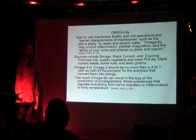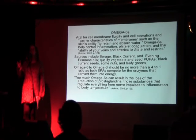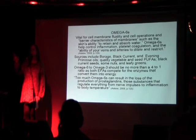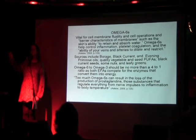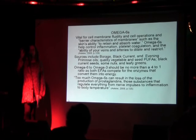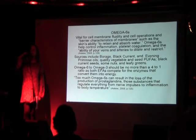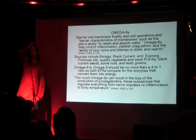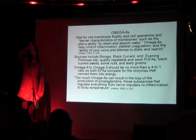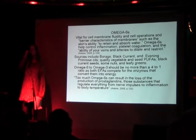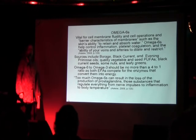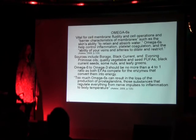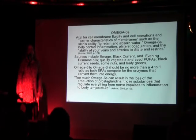The omega-6 to omega-3 ratio shouldn't be more than 4 to 1. The problem is, in our population the ratio is often 25 to 1 — often bad omega-6s, because once you eat them they get rancid. When you have too many omega-6s, both omega-6s and omega-3s utilize the same enzymes in your body, so the excess omega-6s will take over and your body won't process the omega-3s. A perfect balance is 2 to 1, or 4 to 1 at most. Most people are severely omega-3 deficient.